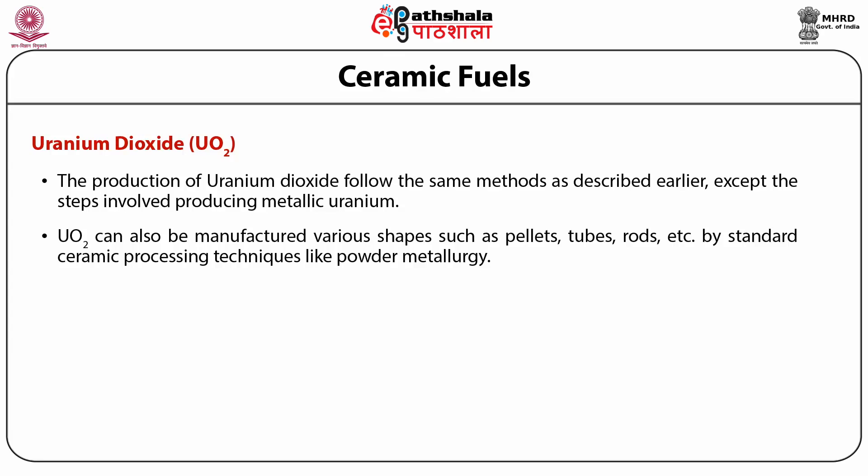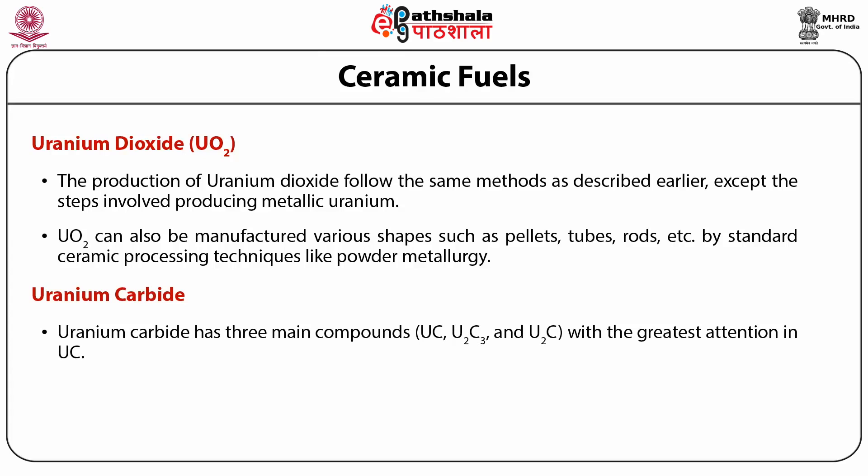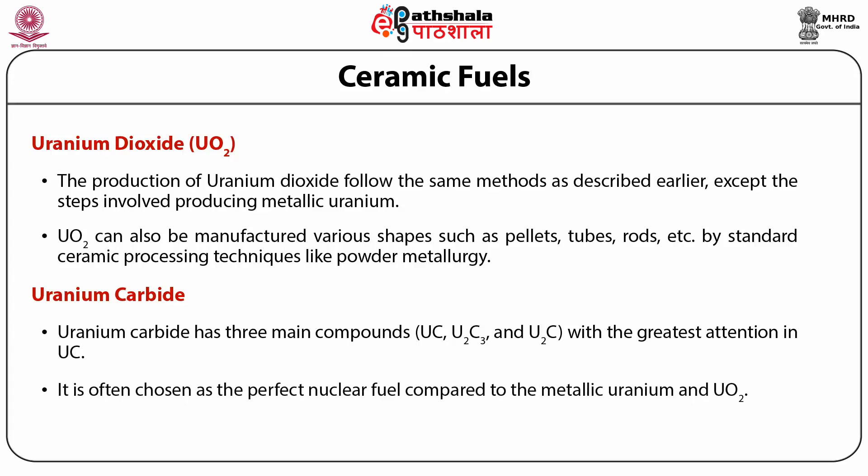The second ceramic fuel is uranium carbide. Uranium carbide has three main compounds: UC, U₂C₃ and UC₂, with the greatest interest in UC. It is often chosen as the preferred nuclear fuel compared to metallic uranium and uranium dioxide. Uranium carbide also shows excellent thermal and irradiation stability, higher uranium atomic density and high thermal conductivity.